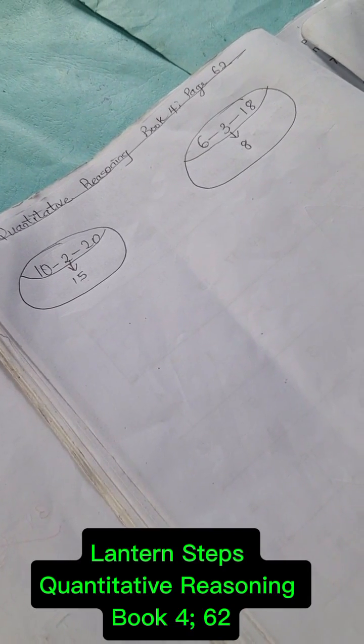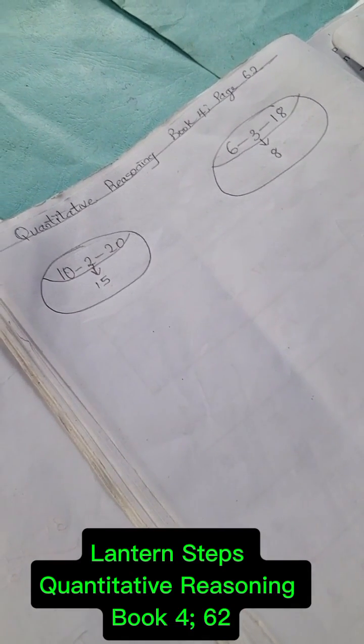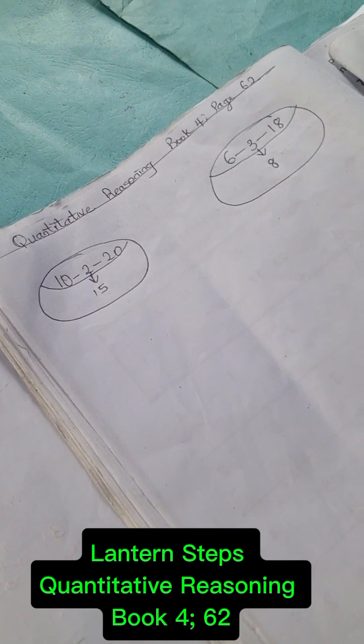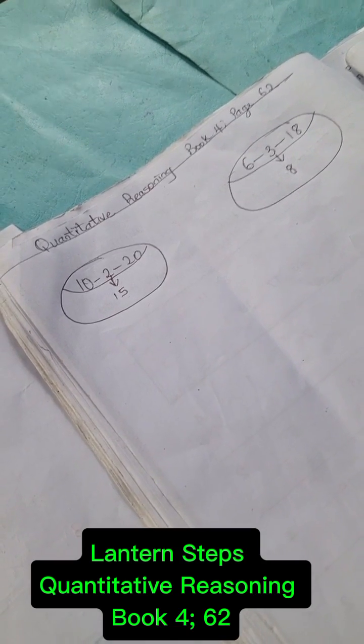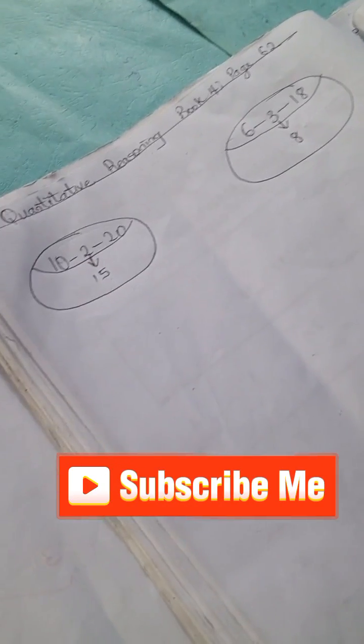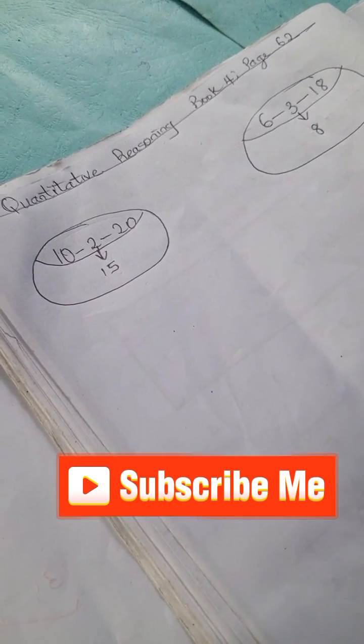Welcome to Quantitative Reasoning Solution Section. Today we have quantitative reasoning from Lantern Steps Book 4, page 62. Thank you for joining in today, and to our new viewers, kindly subscribe to this channel for more quantitative reasoning solutions and problems.